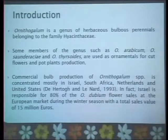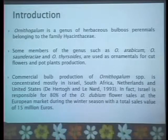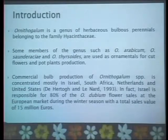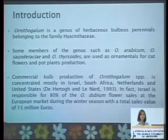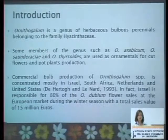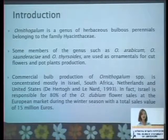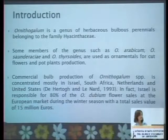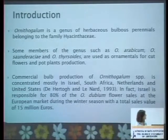Commercial bulb production of Ornithogalum is mainly concentrated in Israel, South Africa, Netherlands, and the United States. In fact, Israel is responsible for 80% of the flower sales at the European market during the winter season, with total sales of 15 million euros.